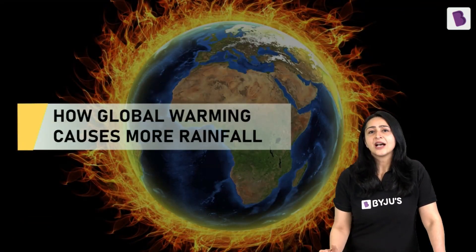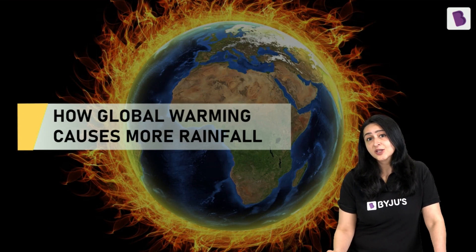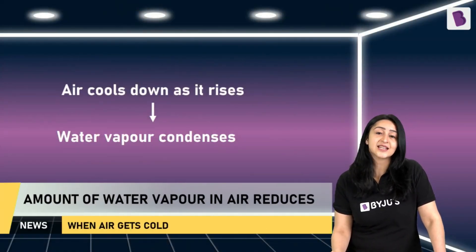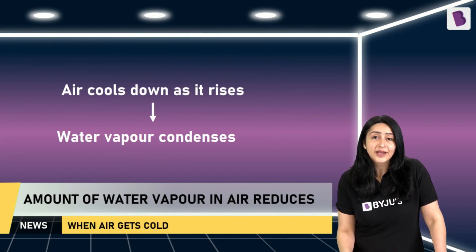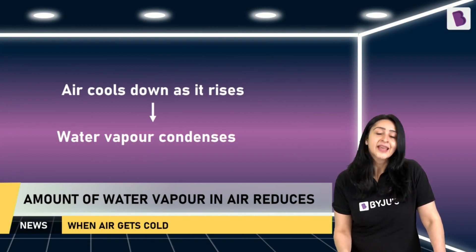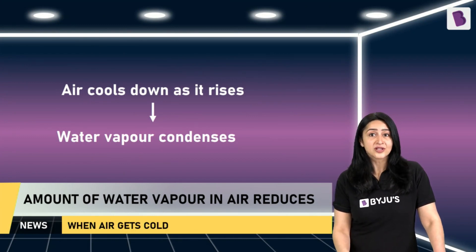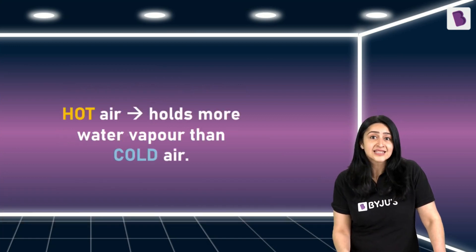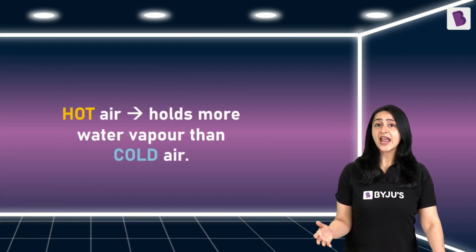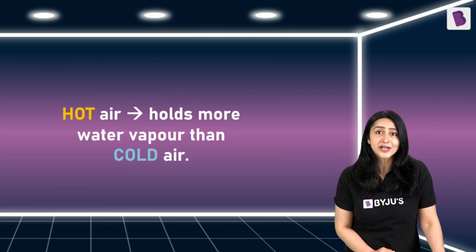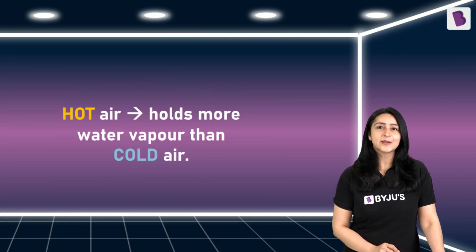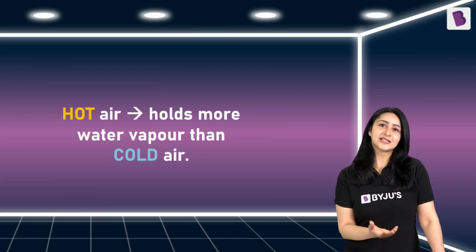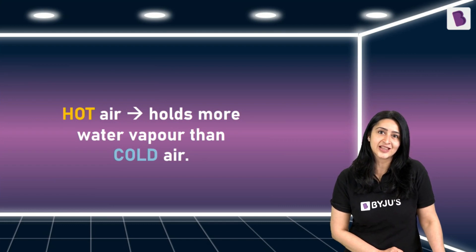Now, how does global warming affect this process? Notice that as the hot air rises and becomes cold, the amount of water vapor it contains reduces, because some of the water vapor condensed to form liquid water. This essentially means that hot air is able to hold more water vapor than cold air. This enhanced ability of hot air to carry more water vapor is the basis of extreme rainfall in recent years.